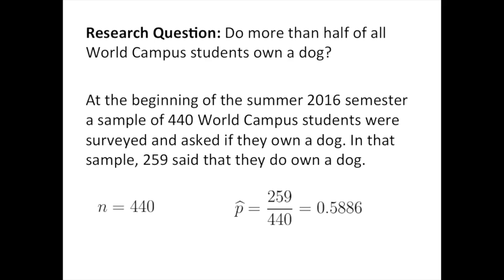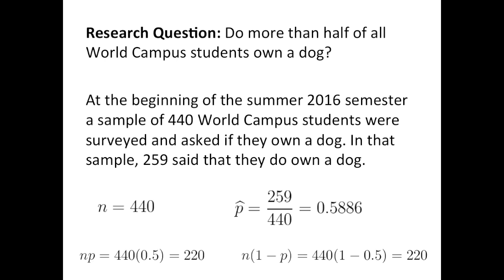The first thing we're going to do is determine whether or not we can use the normal approximation method. Recall from your online notes that in order to use the normal approximation method, n times p and n times 1 minus p must be sufficiently large. I tend to use a cutoff of 10. In this case, both n times p and n times 1 minus p equal 220, so it is appropriate to use the normal approximation method for this scenario.